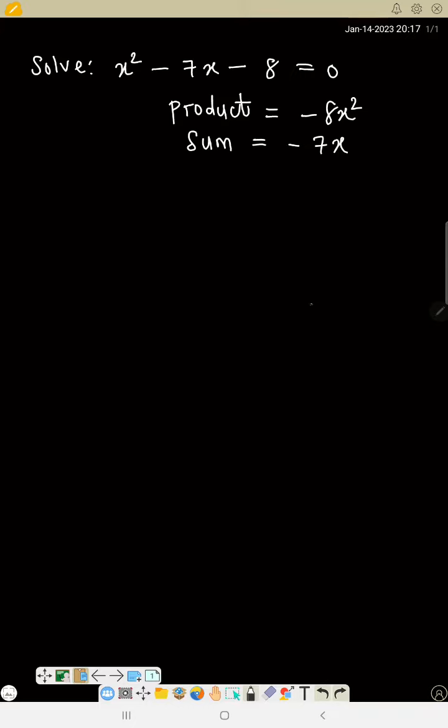Now take 8, the product. So for 8, we have 1 times 8, which gives you 8. 2 times 4 gives you 8. 3 times what? You don't have.